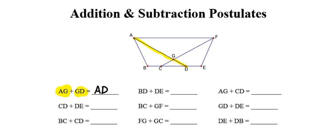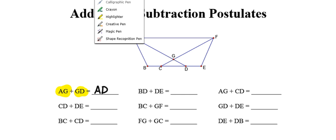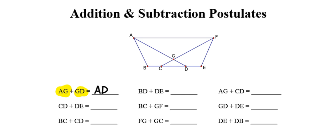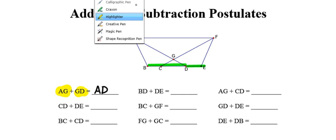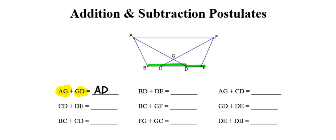The next one says if I take the distance from point B to point D and combine that with the distance from point D to point E, and looking at what that looks like in the picture with those two line segments combined, that would be equal to the distance between points B and E. So my answer here would be B to E.